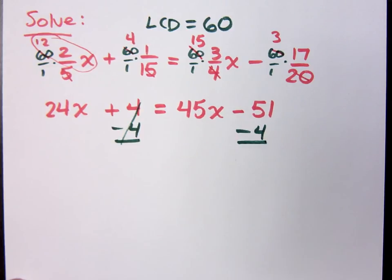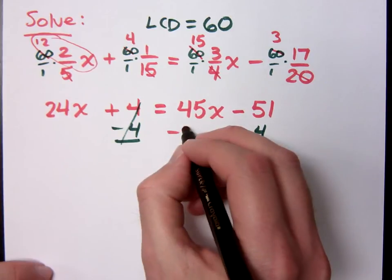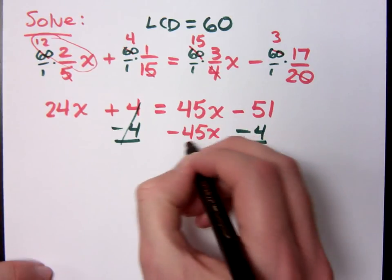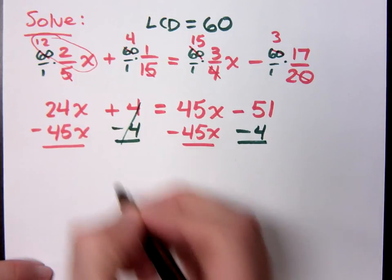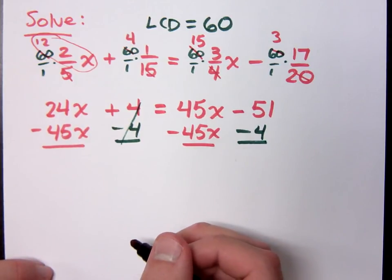So I'm moving the constants to the right. My variables must go to the left, so that's minus 45x. What, you wouldn't do that? That's what you just told me to do.